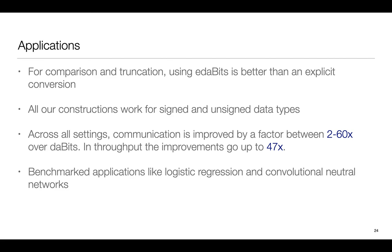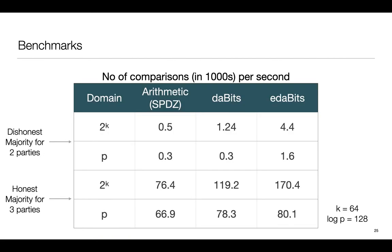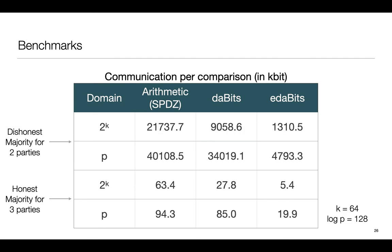We have also given benchmarks for various applications like biometric matching, logistic regression, convolutional neural networks across different settings. The code for benchmarks is available as a part of the MP-SPDZ library. These are some of the benchmarks that showcase how EDABITS performed against a fully arithmetic approach based on SPDZ and against DABITS. For comparisons, we are between 3-5 times faster than DABITS in the dishonest majority case with active security. Looking at the communication, we are about 5 times faster than DABITS in the dishonest majority case and in the honest majority case.